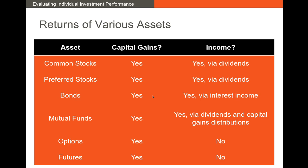For mutual funds, yes there are capital gains and dividends, but we can also get capital gains distributions. These occur when the mutual fund itself sells assets in its portfolio — for example, it owned 100 shares of Tesla and sold them — and those capital gains are split across the number of mutual fund shares and distributed to investors. Finally, options and futures will both have capital gains but are not going to pay out income.